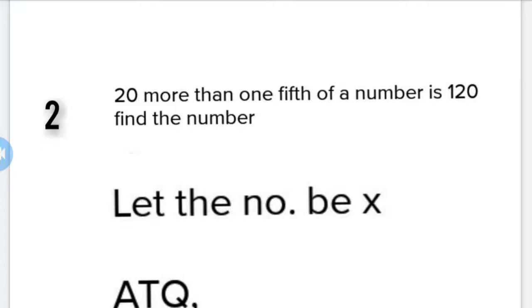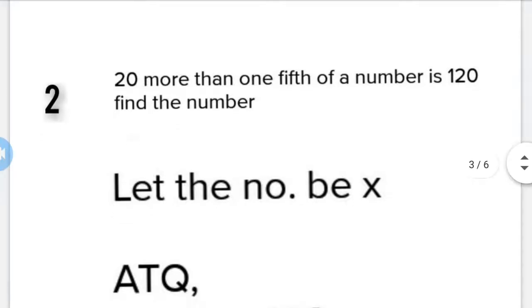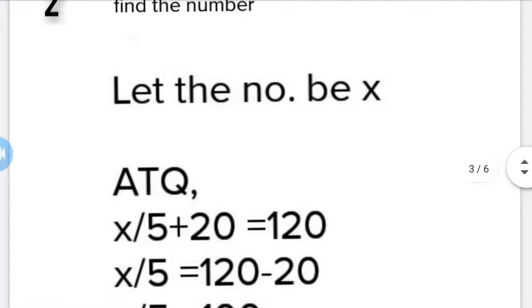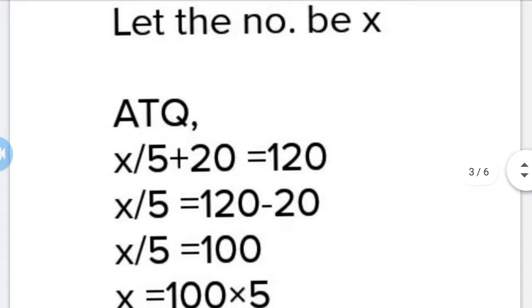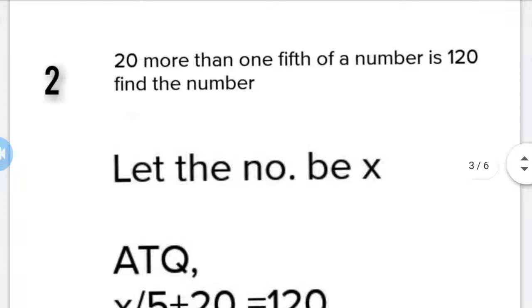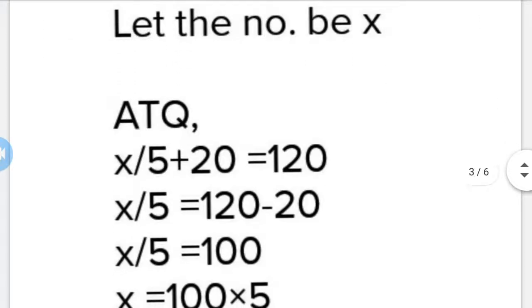One fifth of the number plus 20 equals 120. Let the number be x. According to the question, we get x/5 + 20 = 120.